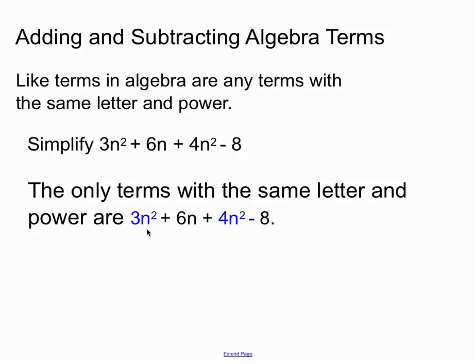So we're allowed to join those two together, but we can't be tempted to join anything else together. Even though that 6 has an n next to it, it's not a like term because it doesn't have the same power. So we've joined the 3n squared and the 4n squared to make 7n squared, and the other two terms, 6n and minus 8, just get listed after it. Don't be tempted to join them up and break any rules.